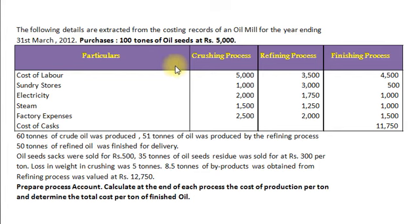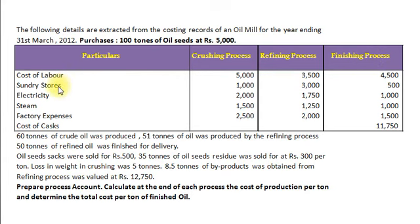The processes are: crushing process, refining process, and finishing process. The cost elements include cost of labor, sundry stores, electricity, steam, factory expenses, and cost of cash.